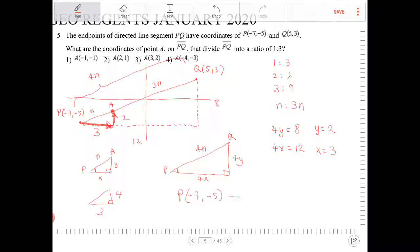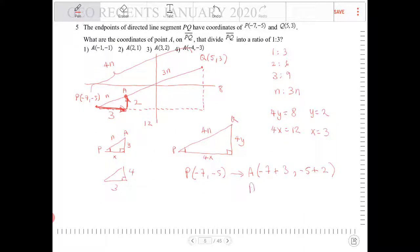So if P was negative 7, negative 5, A would be negative 7 plus 3, and the y coordinate would be negative 5 plus 2. So what is the coordinate of A as a result? It would be negative 4, negative 3. And that would be option 4. Negative 4, negative 3.